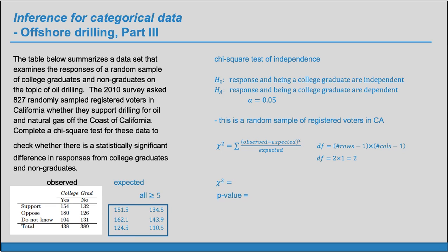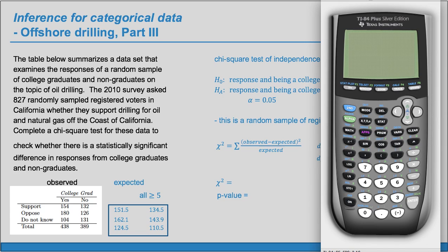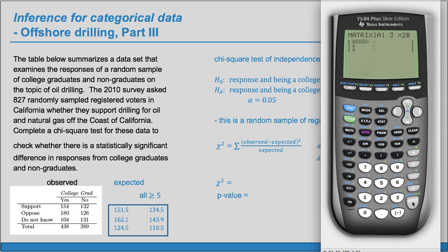Or we can use a calculator shortcut. I'll pull up a TI-84. We need to first enter the observed matrix. Go to 2nd, Matrix, then hit the over arrow to Edit, and always choose Matrix A. This is a 3 by 2 table, so enter 3, enter, 2, enter. Now just enter those observed values — 180, then 126. Be careful not to enter the totals; that's not part of the table. This is a 3 by 2 matrix.